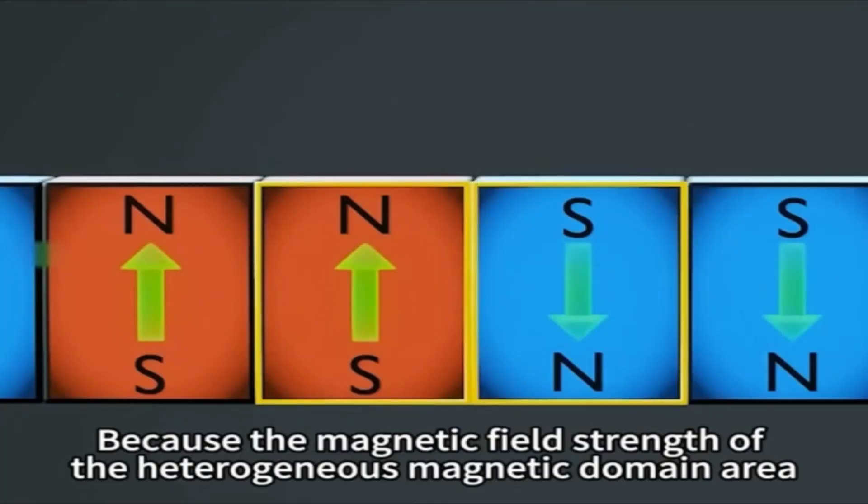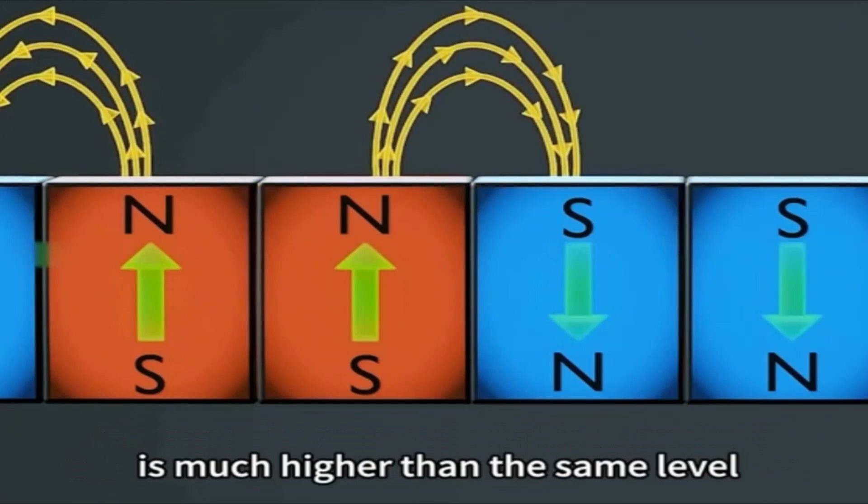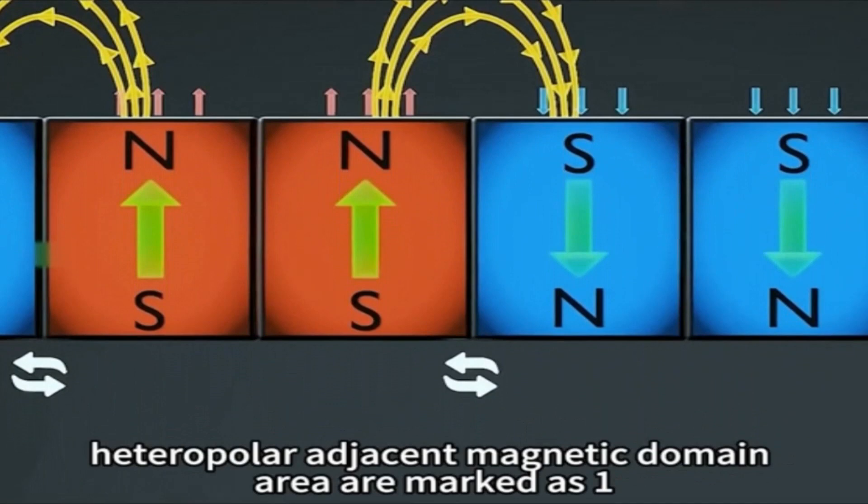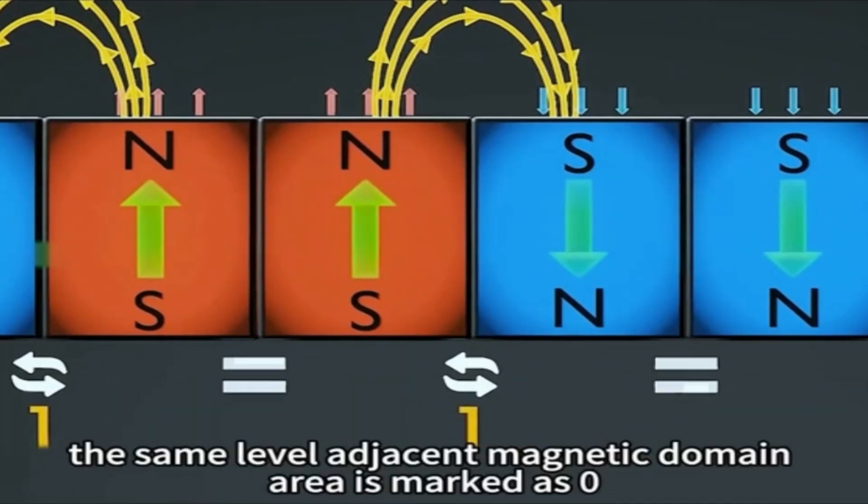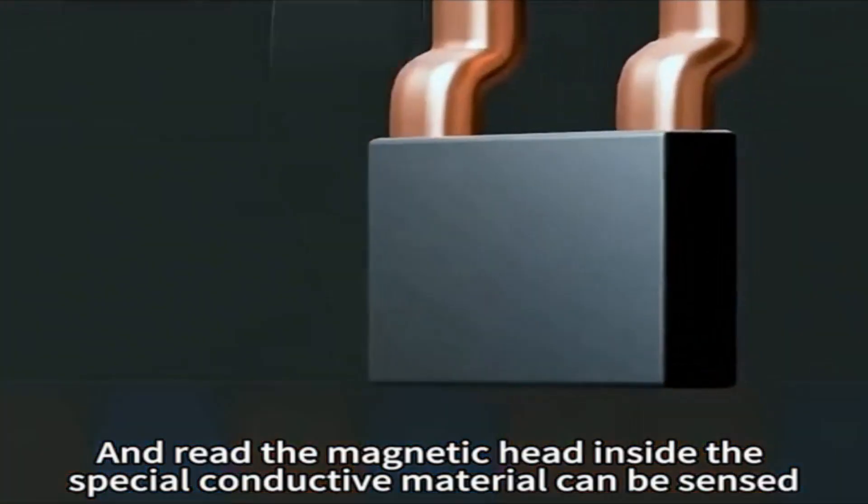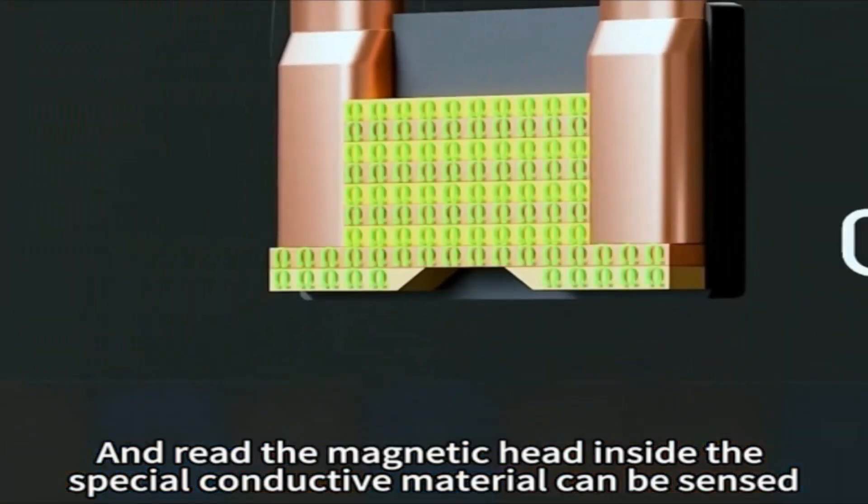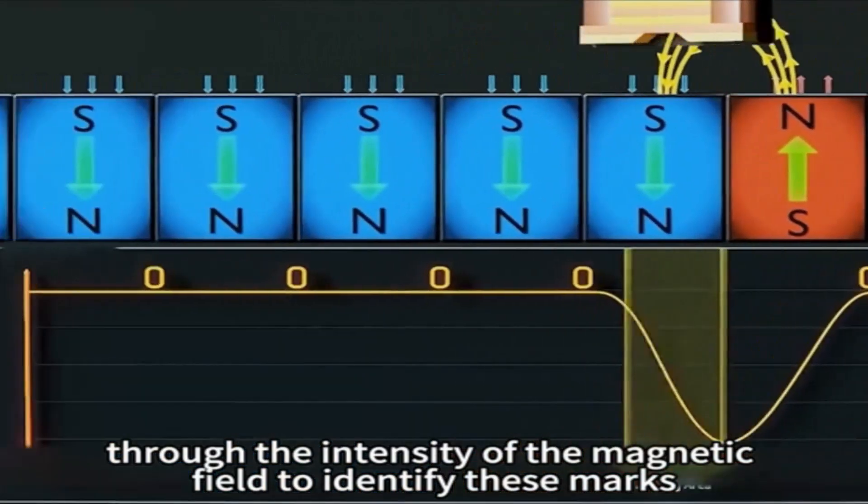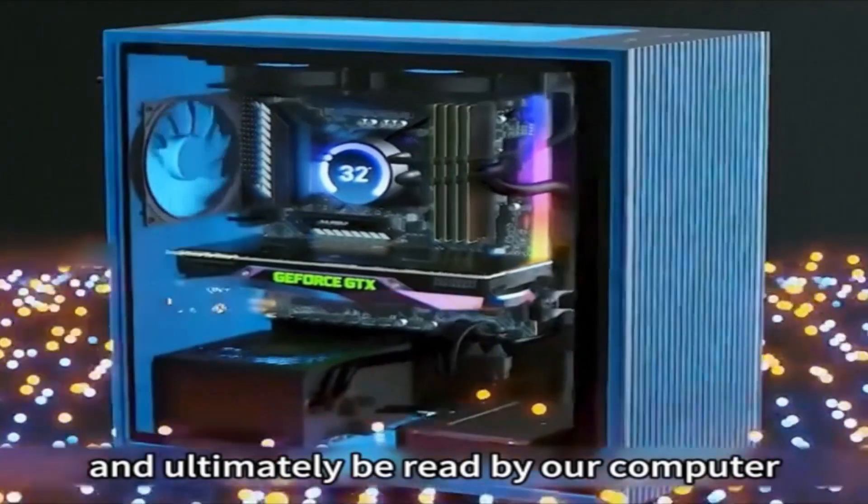Because the magnetic field strength of the heterogeneous magnetic domain area is much higher than the same level, the principle is very simple: heteropolar adjacent magnetic domain areas are marked as 1, the same level adjacent magnetic domain area is marked as 0, and the read magnetic head inside the special conductive material can sense through the intensity of the magnetic field to identify these marks and ultimately be read by our computer.